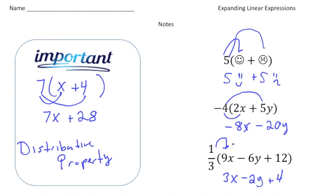So again, when we expand the linear function, we multiply the outside term by everything inside the inside expression. So we do 1 third times 9x, 1 third times negative 6y, and then 1 third times 12. And there it is.